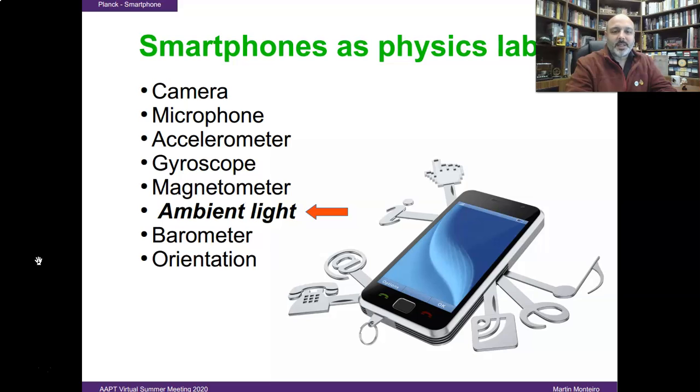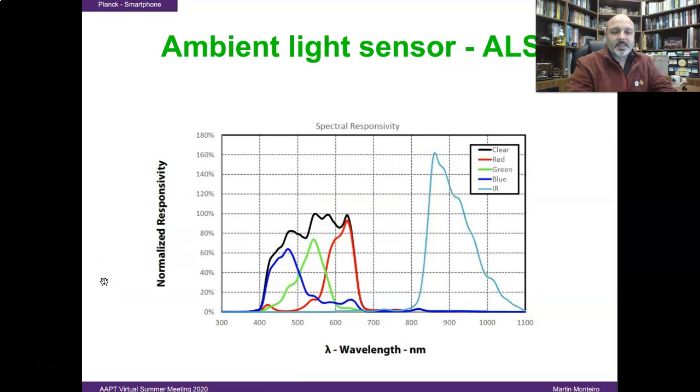and of course the ambient light sensor. This sensor is sensitive to electromagnetic radiation with a spectral responsivity similar to the human eye, from 400 nanometers to almost 700 nanometers. But the ambient light sensor is also sensitive, in many cases, to a portion of the infrared spectrum.